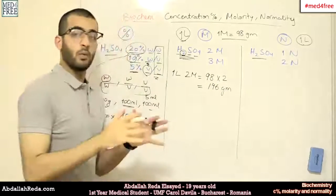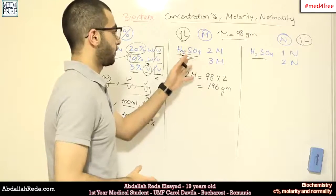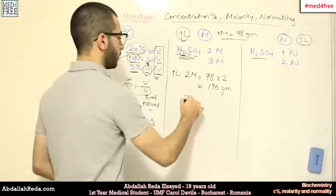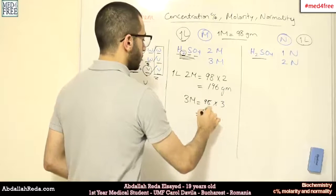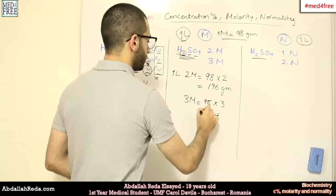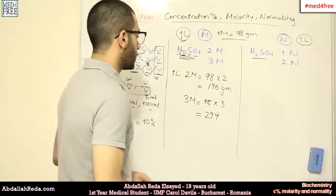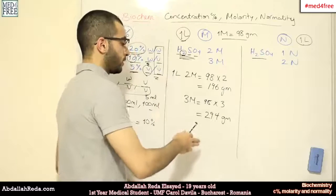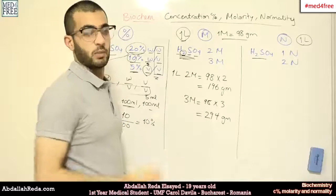So, if I have a 1 liter solution and it contains 196 grams of sulfuric acid, then it's a 2 molar solution. Consequently, a 3 molar solution will contain 98 grams multiplied by 3, which is 294 grams. So, if I have a 1 liter solution that contains 294 grams of sulfuric acid, then it will be a 3 molar solution.